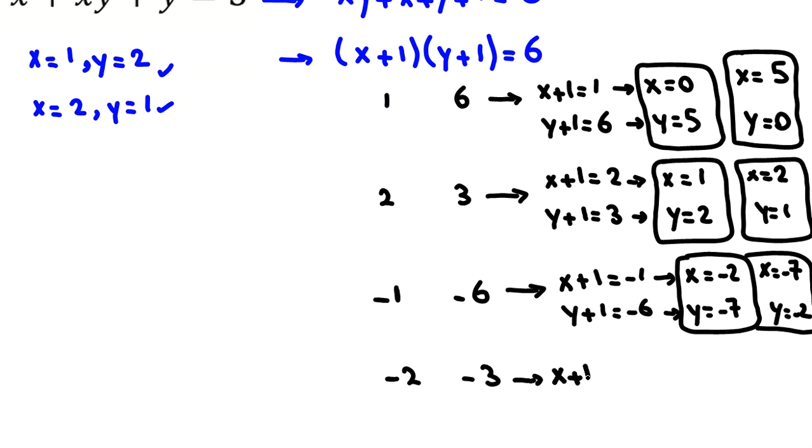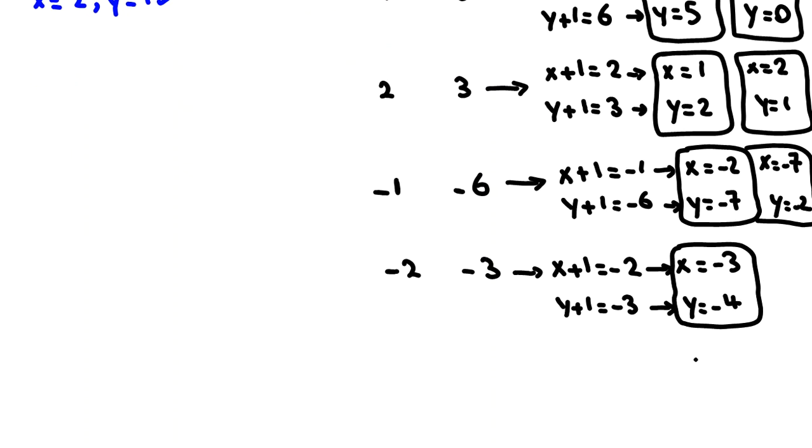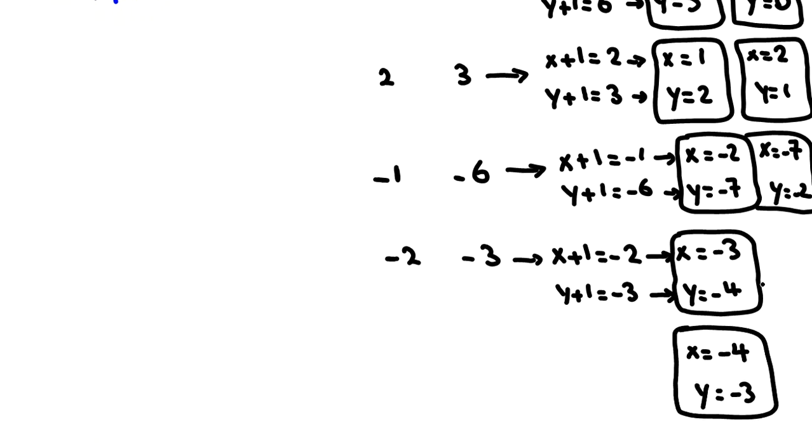x plus 1 equal to negative 2, y plus 1 equal to negative 3. From this part, x equal to negative 3, and from this part, 1 to right side, y equal to negative 4. So one answer here. And also we can switch, x equal to negative 4, y equal to negative 3.